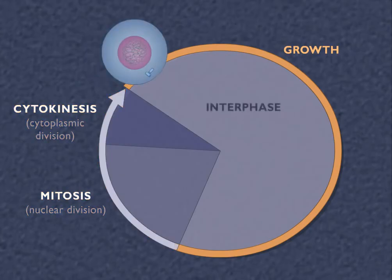Throughout interphase, the cell is engaged in growth and metabolic activities. Interphase can be further broken down into three discrete phases called G1, S, and G2.